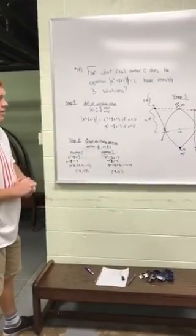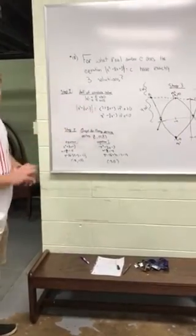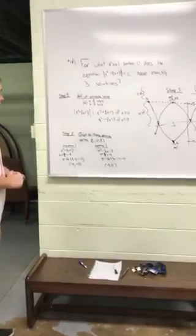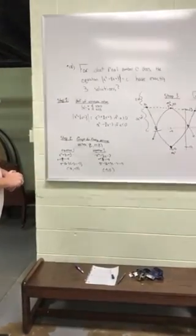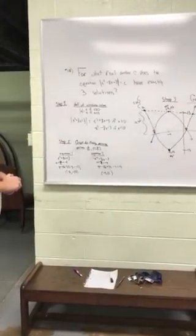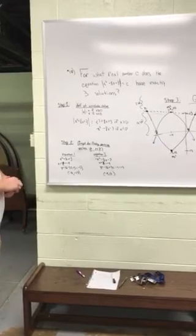So the second step, I would graph by finding the vertices. For the first equation, I would use the formula negative b over 2a for x.